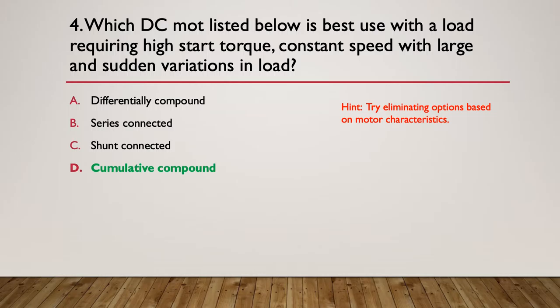The answer is the cumulative compound motor is going to give us the best characteristics. So it has both a series and a parallel component to the field, and because it's in what we call cumulative compound, it gives us that great characteristics of high start torque, constant speed, and it can cope with large and sudden variations and changes in load. So it's a complex machine, but it does the best for those attributes.